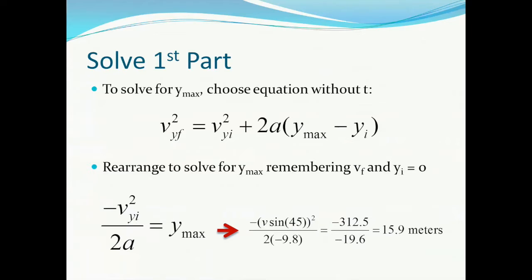To solve for the maximum height, we choose the equation without time, since we don't know it. In this case, it was final velocity squared equals the initial velocity squared plus 2 times gravity times the difference between the maximum height and the initial height. If we rearrange to solve for the maximum height, and remember that the final velocity and initial positions are both equal to 0, we get an answer of 15.9 meters.